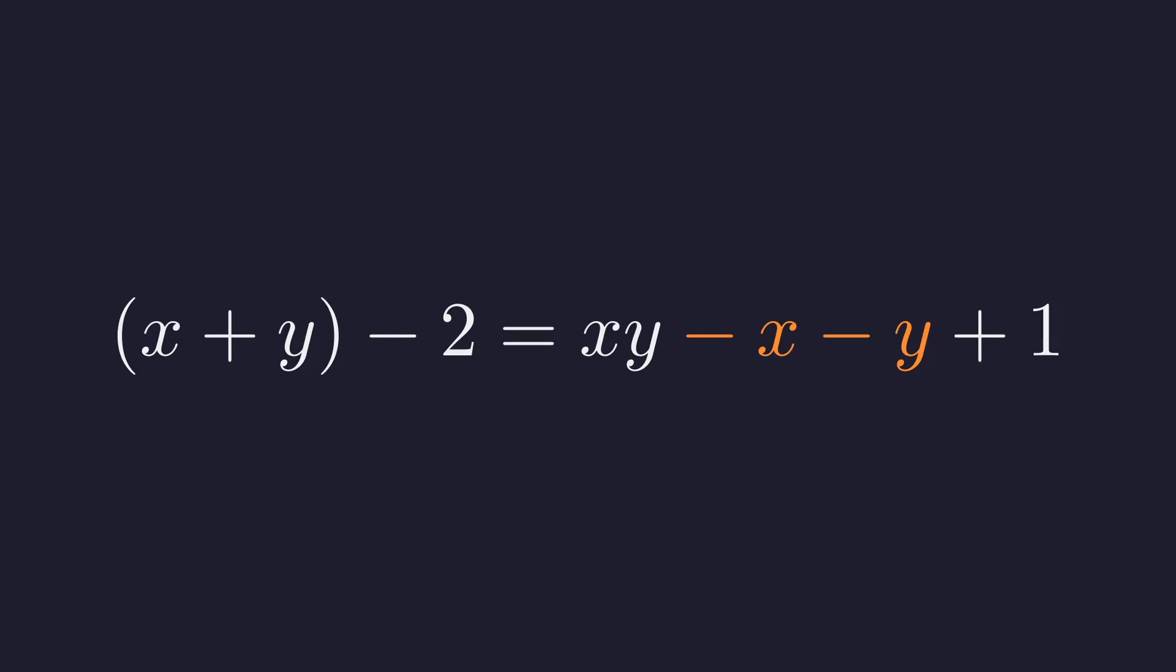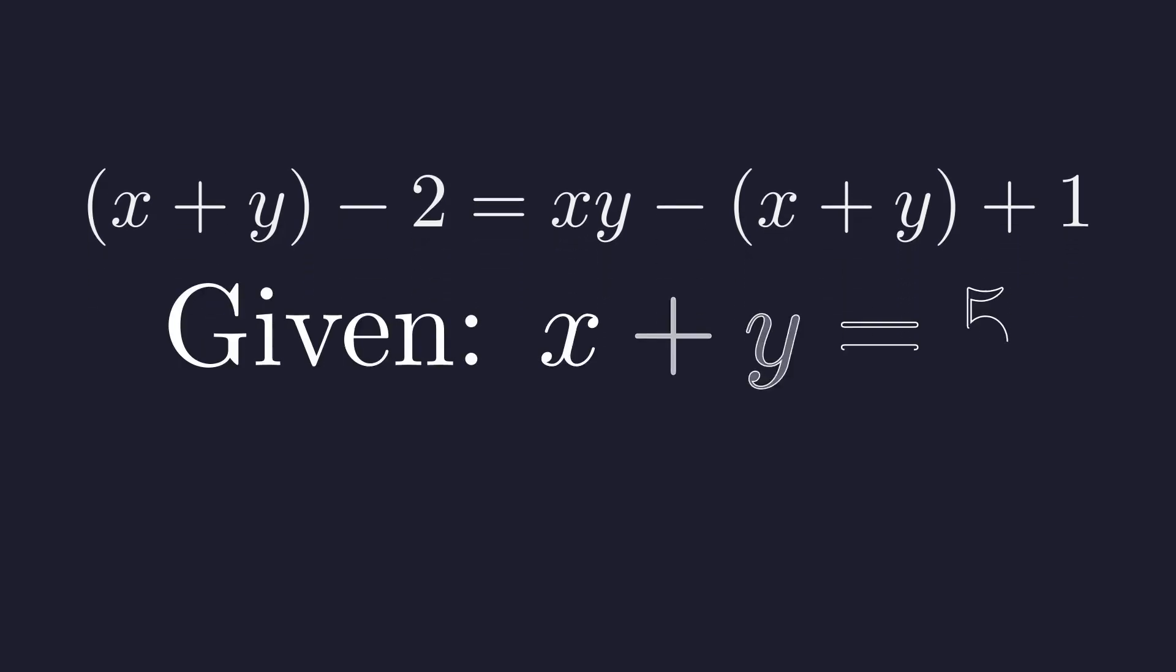Notice something interesting here. We have negative x and negative y, which we can factor together. And here's the beautiful part. This reveals the quantity x plus y appearing on both sides, which is exactly what we need. Now we bring in our second constraint. The quantity x plus y equals 5. We can substitute 5 wherever we see the quantity x plus y.